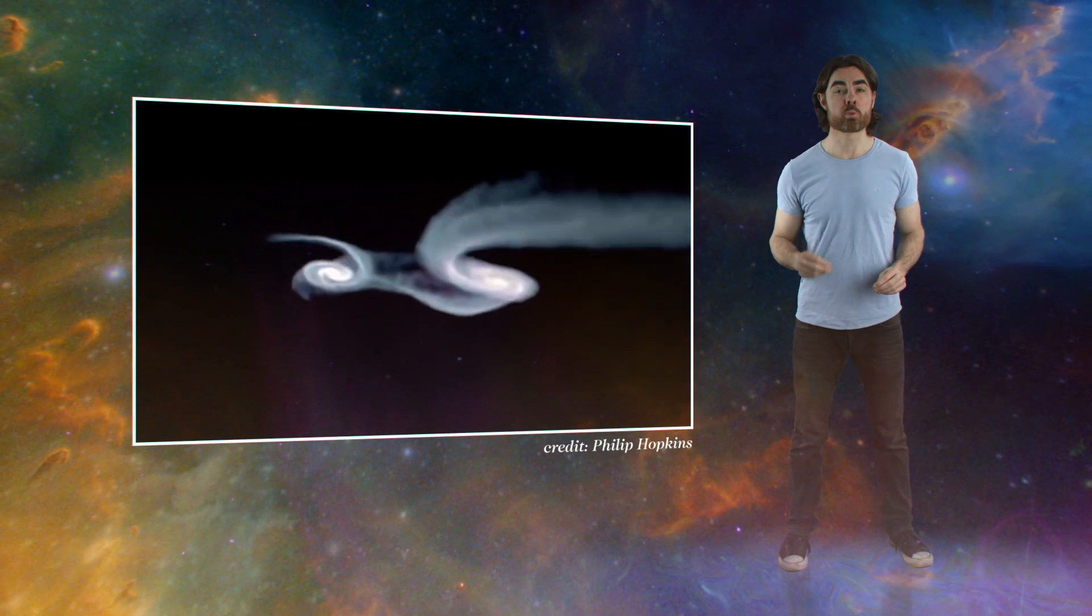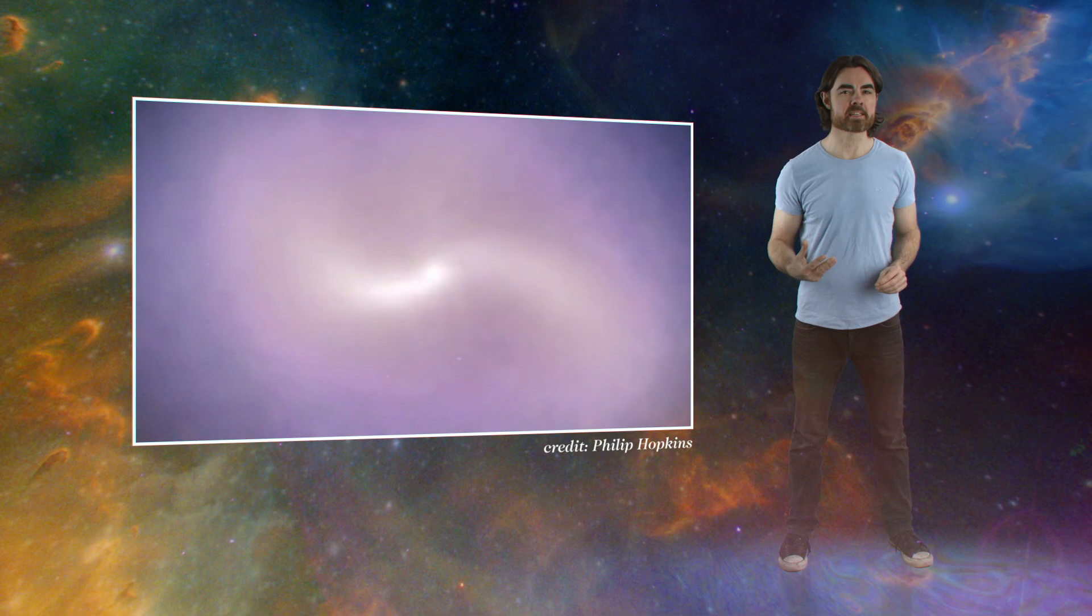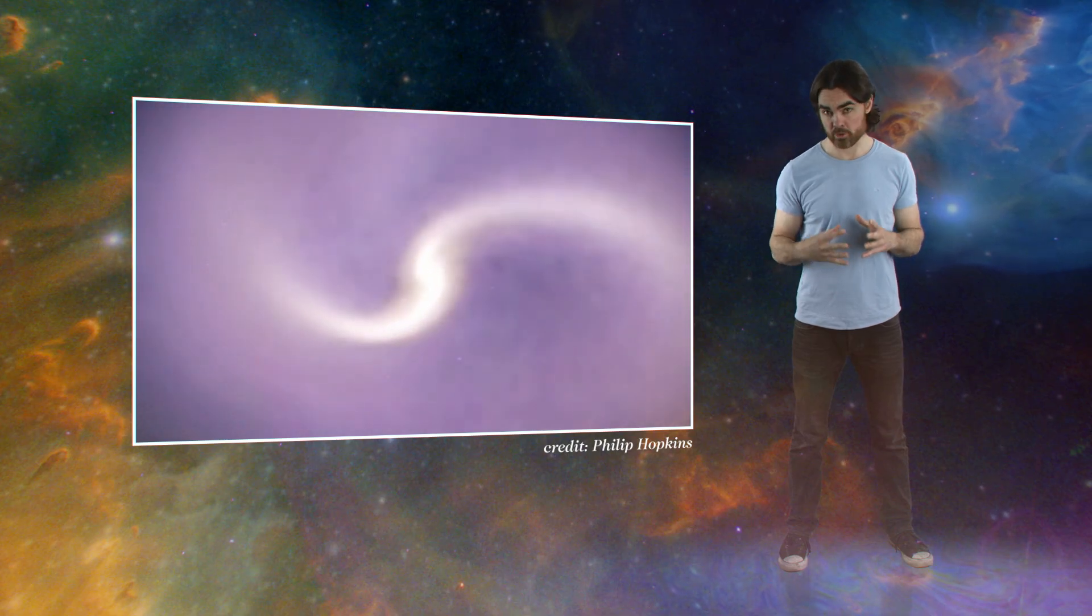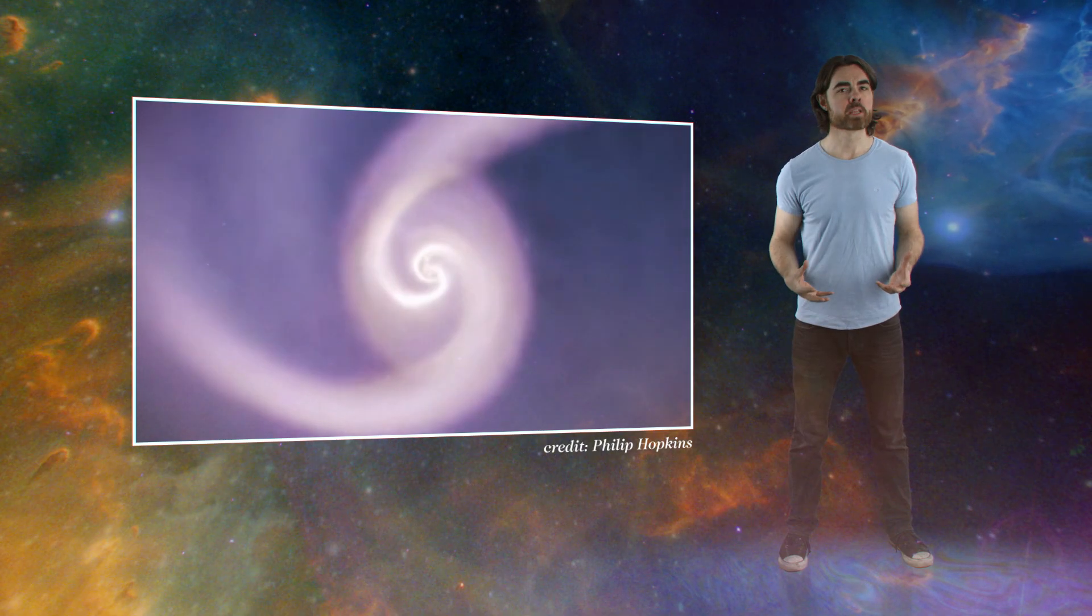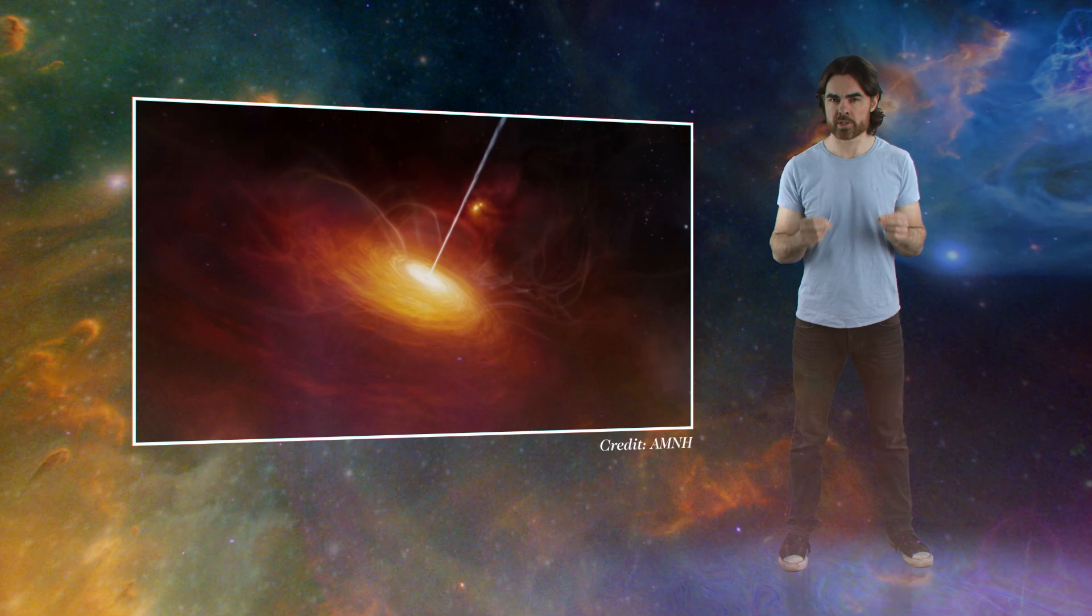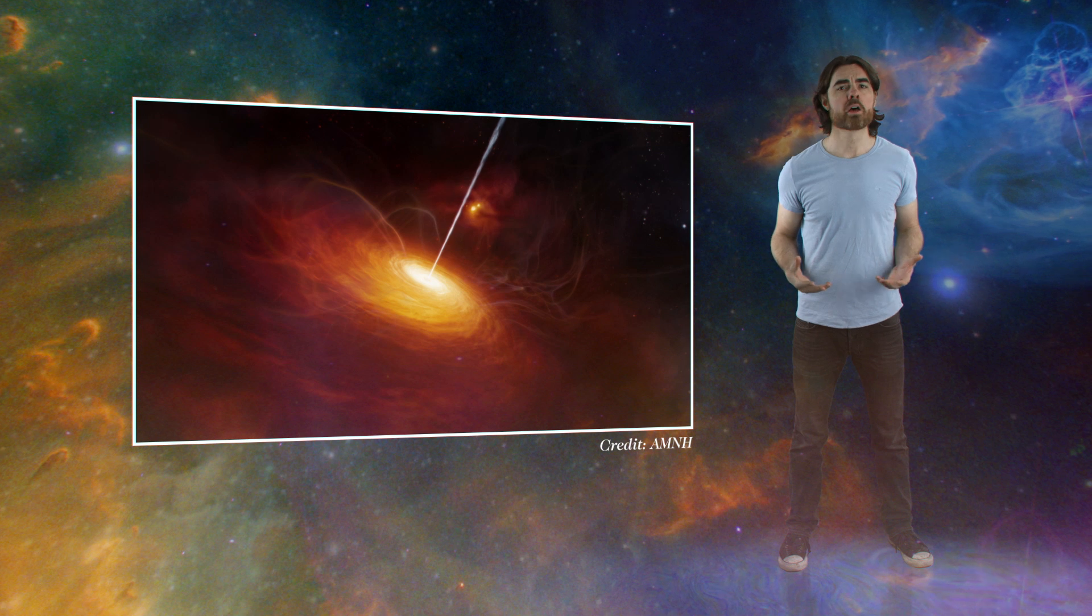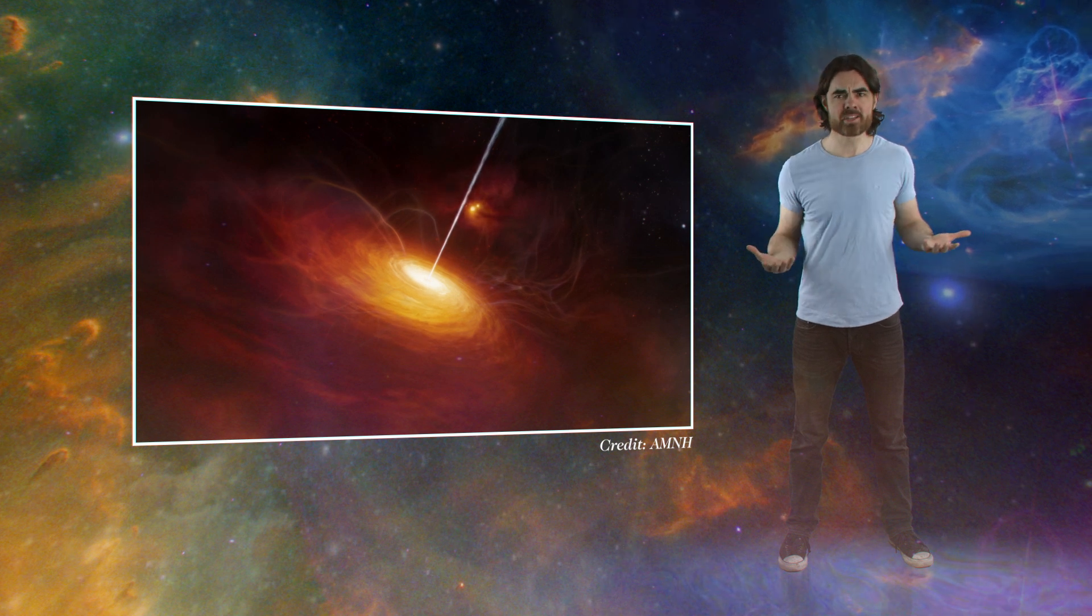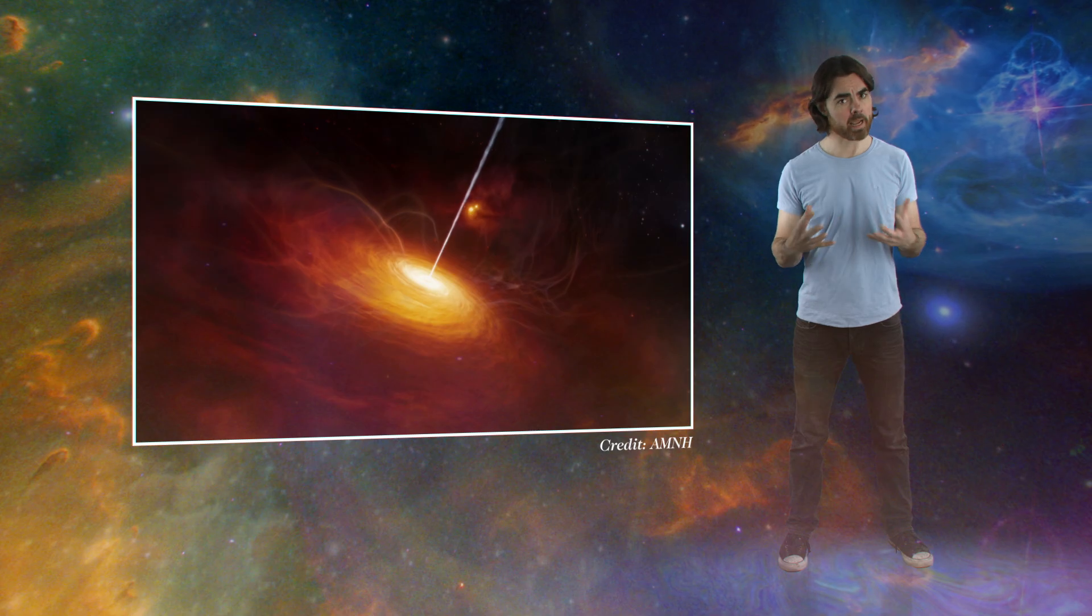One way this can happen is when galaxies merge and grow. That gas descends into the waiting black hole's gravitational well and gains incredible speed on the way. It is swept up into a raging whirlpool around the black hole that we call an accretion disk, where its energy of motion is turned into heat. The heat glow of the accretion disk is so bright that we can see quasars to the ends of the universe. Some gas is swallowed, causing the black hole to grow.